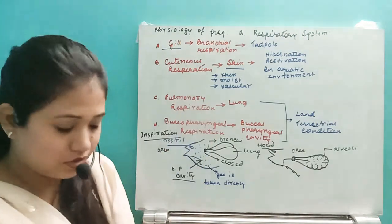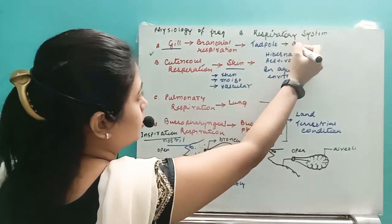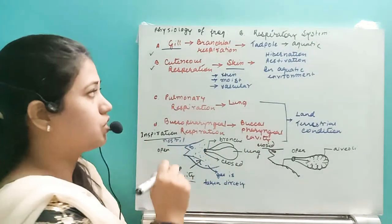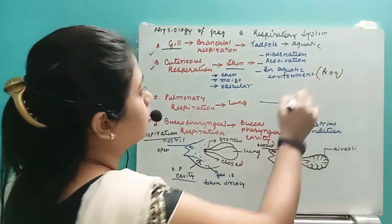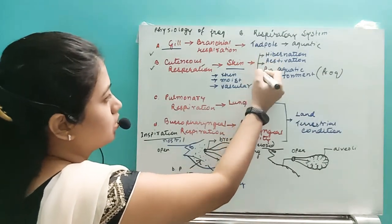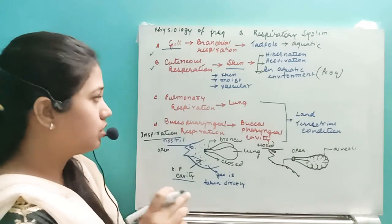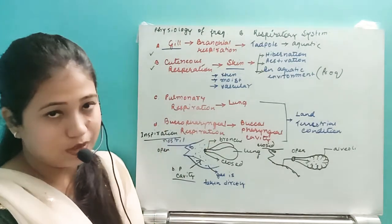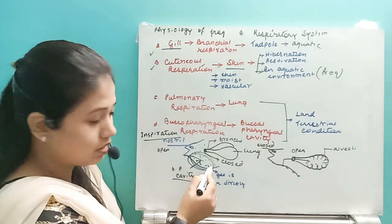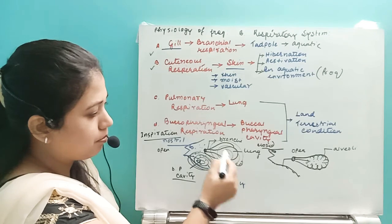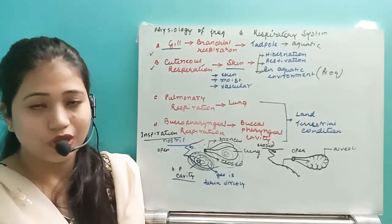To summarize the respiratory system: the frog has four types of respiratory organs — gills (branchial respiration) during the tadpole stage; skin (cutaneous respiration) during hibernation, estivation, or in an aquatic environment, where the skin must be thin, moist, and vascular; and both lungs (pulmonary) and buccal cavity (buccopharyngeal) when on land in the terrestrial condition.